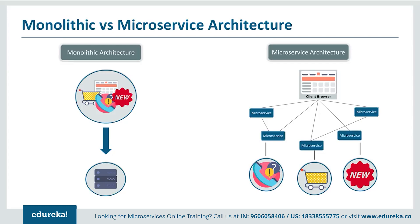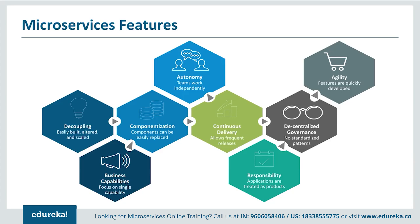In summary, monolithic architecture had a single framework for all features on a single database, whereas microservice architecture has different microservices for each feature, each handling its own database. The features that made developers shift to microservices include: applications are easily built, altered, and scaled; they focus on a single capability; all components can be easily replaced; teams work independently; frequent software releases are allowed; applications are treated as products; and all features are quickly developed.